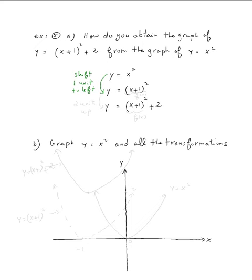Now, to obtain the graph of y equal x plus one squared plus two from the graph of y equal x plus one squared, since there is plus two outside — if you call this f of x, then this is f of x plus two. Since plus two is outside, that means two units up. So we're going to shift the second graph two units up.